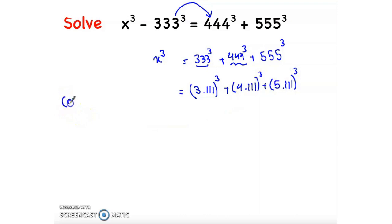We know that a times b to power m equals a to power m times b to power m. So we can distribute the cube to 3 and 111. So 3 cubed times 111 cubed plus 4 cubed times 111 cubed.